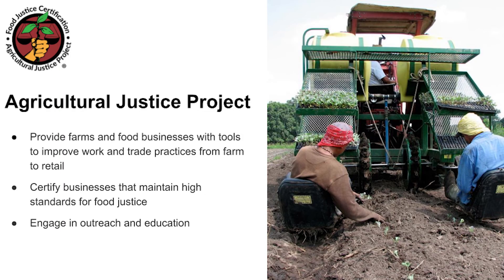The Food Agricultural Justice Project provides a food justice certification for businesses and farms, certifying that they maintain high standards of food justice — not just in producing food and making that food accessible, but also in the work conditions and trade practices throughout that system. They also have outreach and engagement education programs.